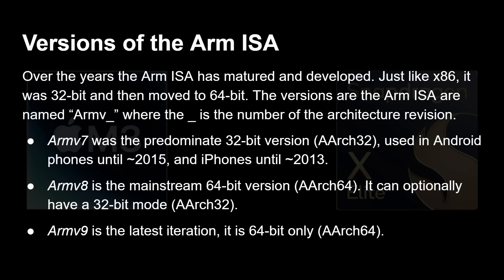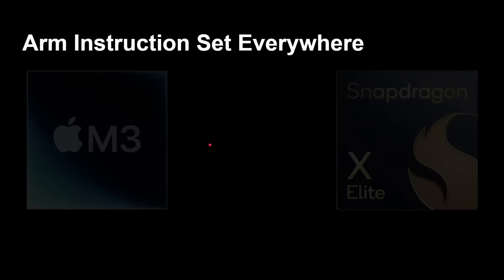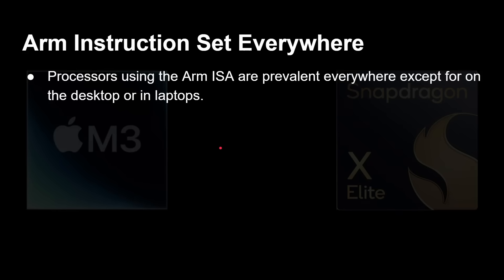Over the years the ARM ISA has matured. Like x86 it was 32-bit, then moved to 64-bit. The versions follow naming like ARMv7, which was the predominant 32-bit version used in Android phones around 2015 and iPhones around 2013. ARMv8 is the mainstream 64-bit version — called AArch64 — and can optionally include a 32-bit AArch32 mode for compatibility. The latest iteration, ARMv9, used for example in the Cortex-X4, is 64-bit only and still uses the AArch64 instruction set with additional features. I've got a whole video on this channel about ARMv9.